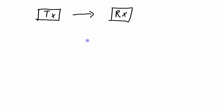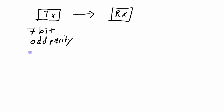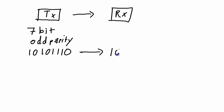Now let's look at examples in an odd parity system that groups data in 7-bit chunks. The parity bit is added to make the total number of ones in the 7-bit chunk an odd number. If the data to transmit is 1, 0, 1, 0, 1, 1, 1, there are 5 ones — an odd number — so the parity bit is 0. The receiver gets 1, 0, 1, 0, 1, 1, 1, 0, counts 5 ones, which is odd, and confirms everything is good.